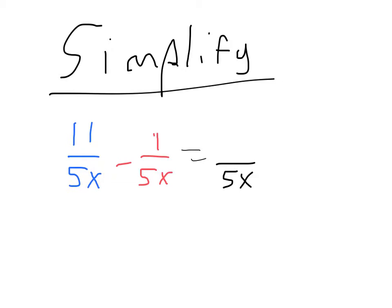And 11 subtract 1 gives us 10. But don't forget to simplify 10 over 5 times some number. That can be simplified because you can divide the top and the bottom by 5. So that's 2 over 1x. There's your final answer.